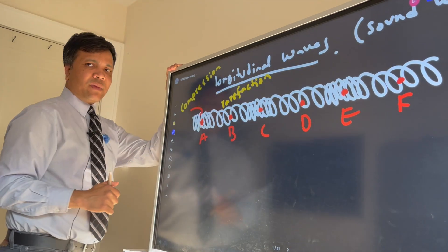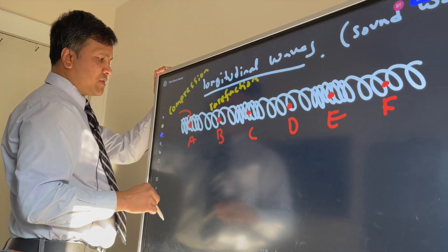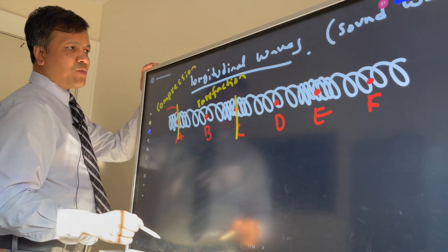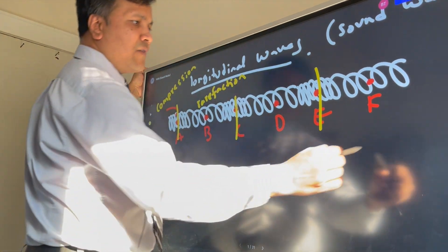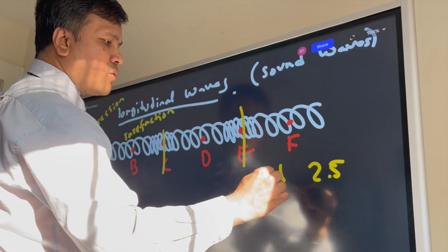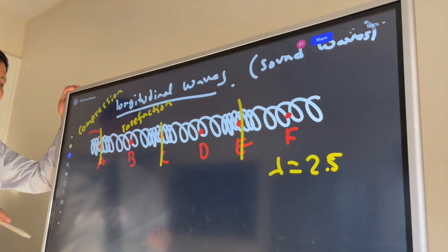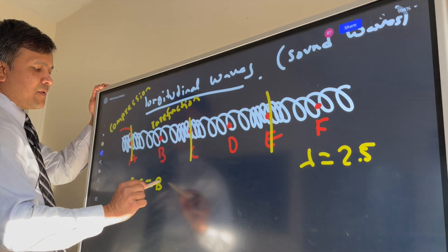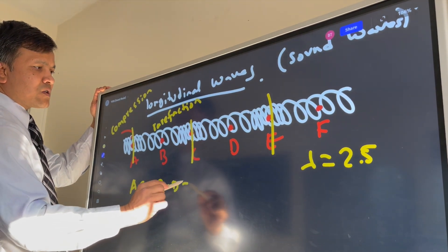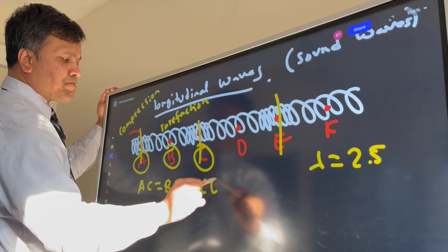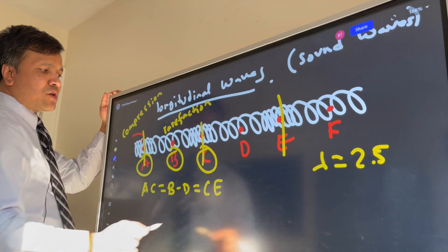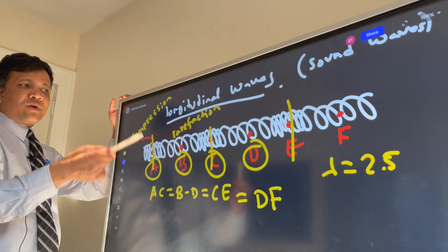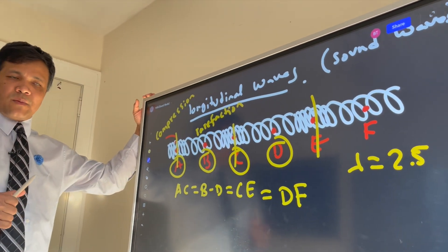This other region is called rarefaction. Now, how many wavelengths are shown here? From compression to compression: one wavelength, two wavelengths, and two and a half — so 2.5 wavelengths. You can measure this as A to C, which equals B to D, which equals C to E, which equals D to F. So there are four ways you can identify 2.5 wavelengths.